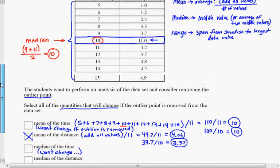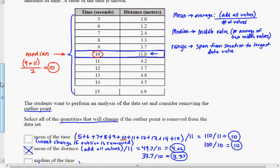To find the median of the distance, the only choice you have is to list these in order, which they are not at this point. So let me make a list of these in order. 1.0, 1.2, and then 2.4, and then 3.3, 3.7, 3.7. And then 4.2, 4.5, 4.8, 4.9, and then the large value is 11.